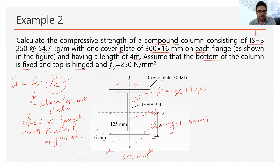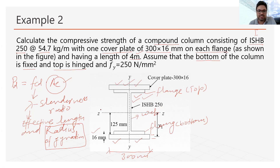First we need to find out the properties of the I-section; the size of the plate is already given. For the radius of gyration, in the previous case we found it directly from the steel table, but in this case we have to calculate it because there are three sections. The radius of gyration for the I-section can be found directly from the steel table, but for the two plates we have to calculate it separately.